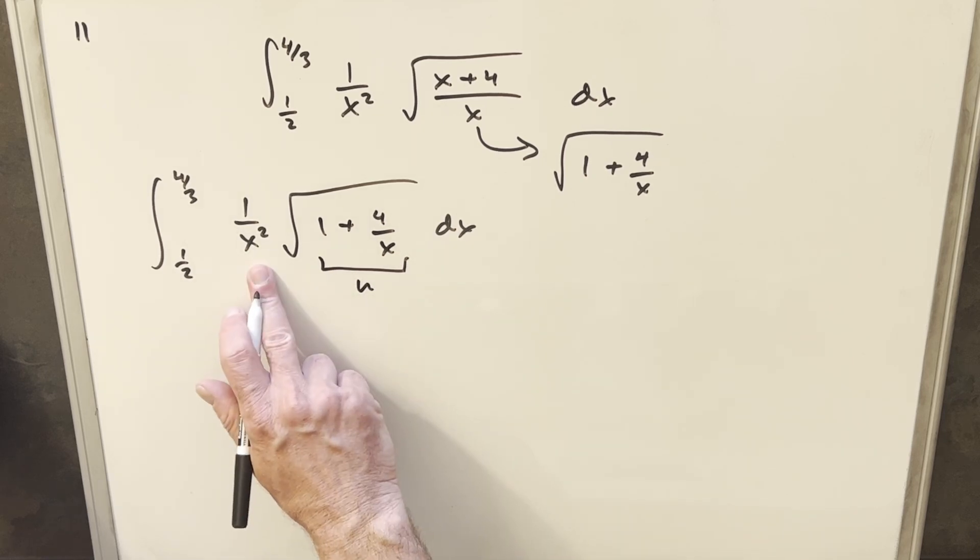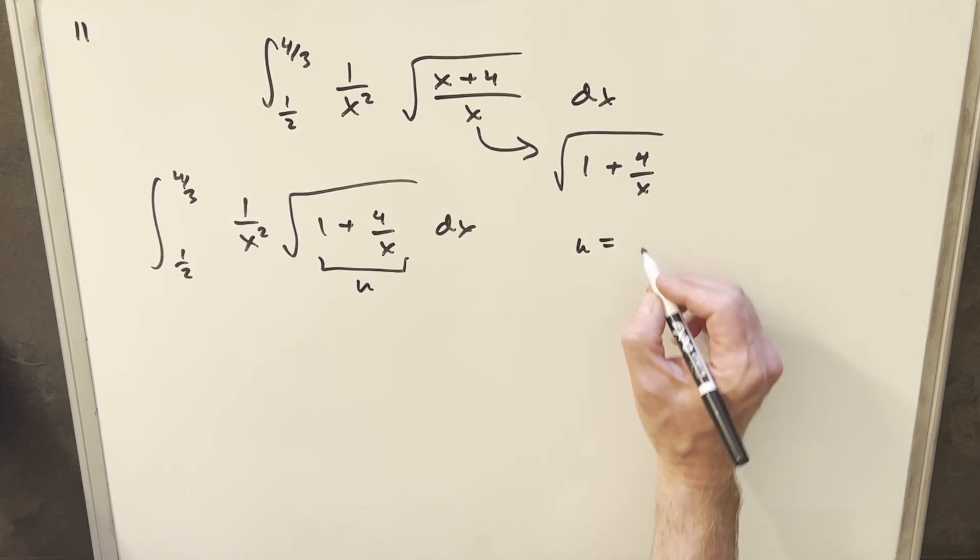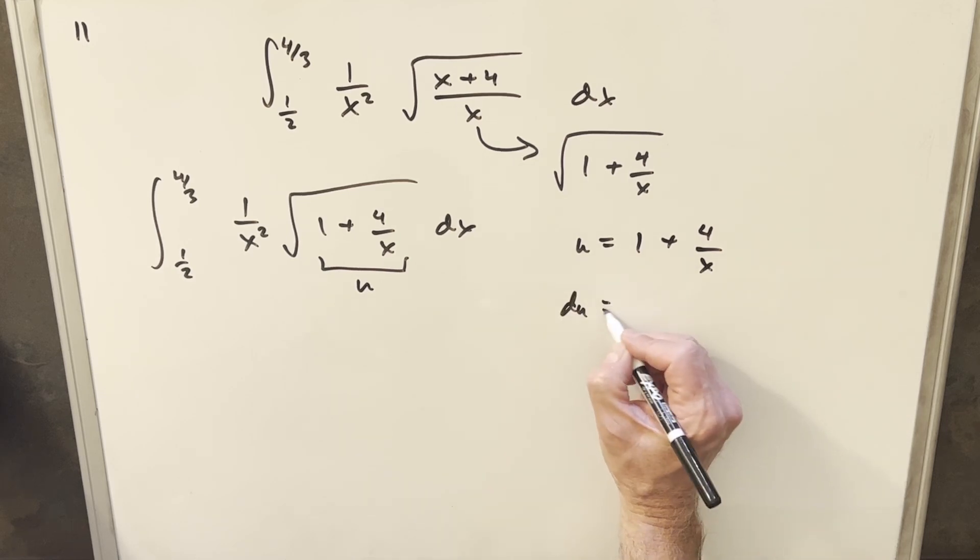If I make this my u, I think it's going to work out nice with the 1 over x squared. So let's just see what we have. I'm going to call my u equal to 1 plus 4 over x. We'll take our derivative.